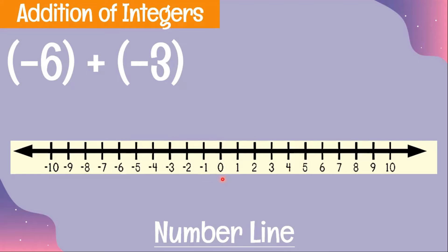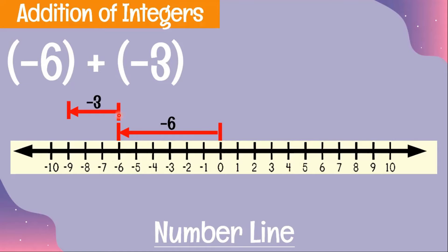Example 2: negative 6 plus negative 3. Again, let us start at zero. Since we have a negative sign, we use a red arrow. Negative 6 means 6 units to the left, and plus negative 3 means 3 more units to the left using a red arrow. Therefore, we have negative 9 in all, so the answer is negative 9.